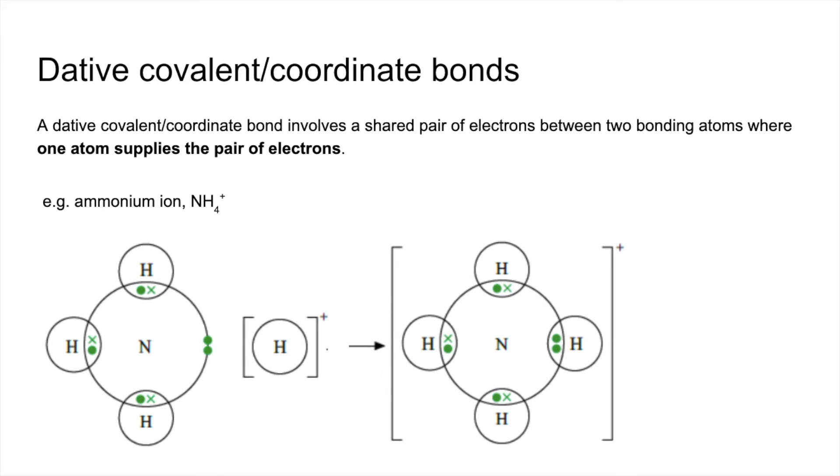Well, the lone pair of the nitrogen in the ammonia molecule can provide a pair of electrons for this bond here. So it's still a shared pair of electrons, but both of the electrons have been supplied by the nitrogen atom. So this here is a dative or coordinate bond.